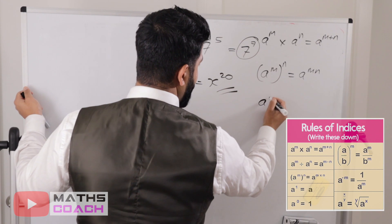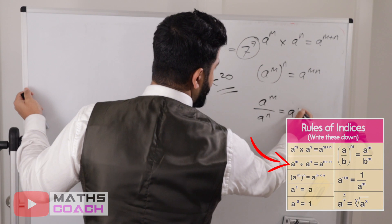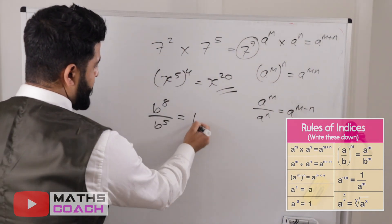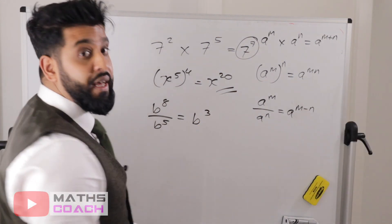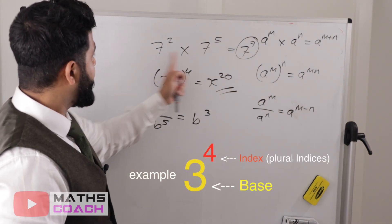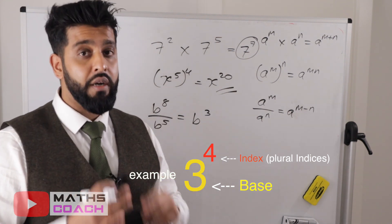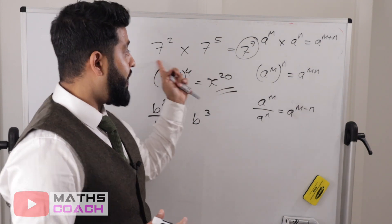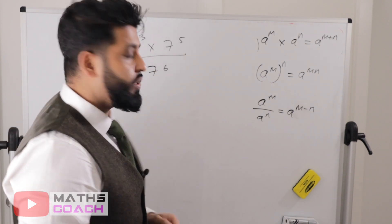For a to the power of m divided by a to the power of n, you simply do a to the power of m minus n — you take away the two powers. So here we do 8 take away 5, which gives you 3. This only works if the base numbers are the same — that's very important. You can't apply it when the bases are different.